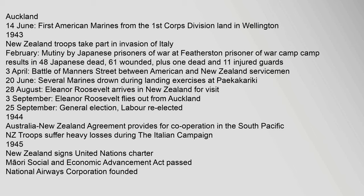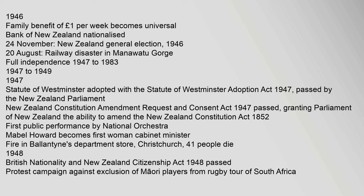3 April: Battle of Manners Street between American and New Zealand servicemen. 28 August: Eleanor Roosevelt arrives in New Zealand for a visit. 3 September: Eleanor Roosevelt flies out from Auckland. 25 September: General Election — Labour re-elected. 1944: Australia–New Zealand Agreement provides for cooperation in the South Pacific. NZ troops suffer heavy losses during the Italian campaign. 1945: New Zealand signs United Nations Charter. Maori Social and Economic Advancement Act passed. National Airways Corporation founded.